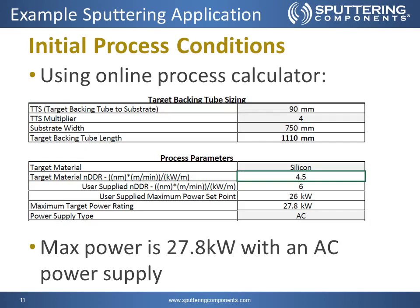Next, we need to determine the initial process conditions using the online process calculator available on the sputtering components website. We start off by inputting the TTS at 90mm, the TTS multiplier of 4 received from the previous calculator, the substrate width at 750mm, and the backing tube length comes out at 1,110mm. Next, we select our target material of silicon, and below we can see that the maximum power rating is 27.8 kilowatts.